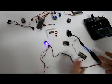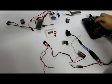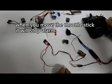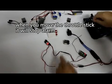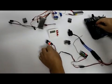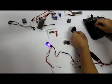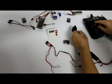It is alarming now. It means signal lost, it does not receive any signal from the throttle. When you move the throttle stick, it will stop the alarm. Now I move the throttle at remote mode.